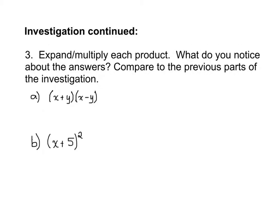In part 3 of the investigation we take a slightly different approach. Instead of starting with the polynomial, we start with the product of two binomials, expand each one, simplify, and see what we can notice about the answers. For part a we have x plus y times x minus y. To expand these brackets we use FOIL: first times first, outside times outside, inside times inside, and last times last. x times x is x squared, x times negative y is negative xy, y times x is positive xy, and y times negative y is negative y squared.